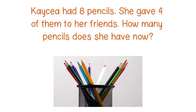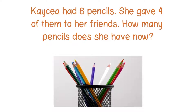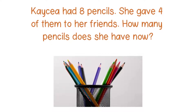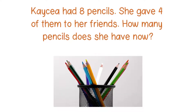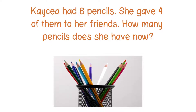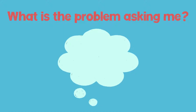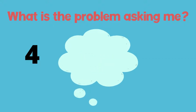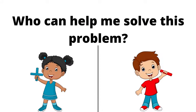Now it's your turn. Use your paper to draw a picture to show what's happening, or you can use your counters to model the problem. It says: Kasia had eight pencils. She gave four of them to her friends. How many pencils does she have now? Remember, the first thing we need to do is think about what the problem is asking us to solve. We need to figure out what happens if Kasia started out with eight pencils but then gives four of them away — we need to know how many are left. So are we putting numbers together and adding like Put Together Patty, or should we think about Takeaway Tim and find out how many are left if we subtract the numbers? Which one of these friends do you think can help us solve this problem?